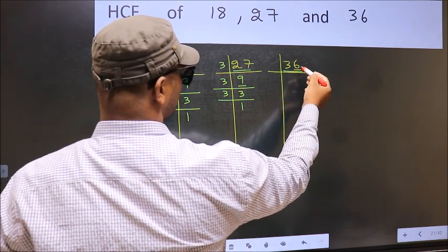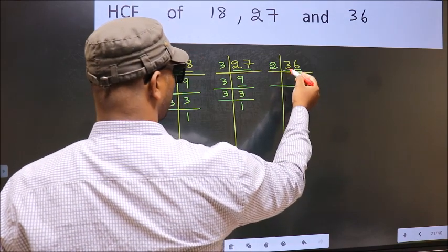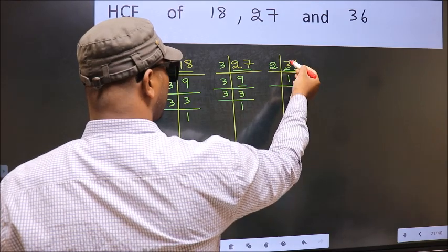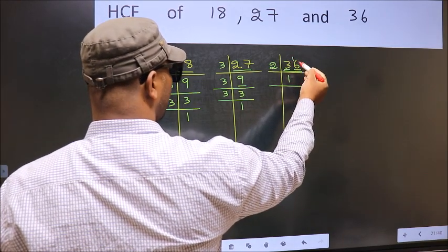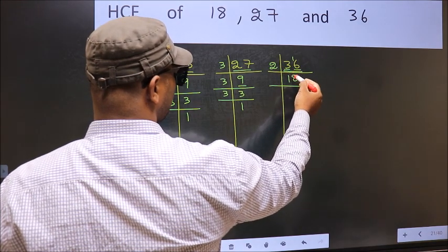36. Last digit 6, so take 2. First number 3. A number close to 3 in 2 table is 2 times 1 equals 2. 3 minus 2 equals 1, 1 carried forward 16. When do we get 16 in 2 table? 2 times 8 equals 16.